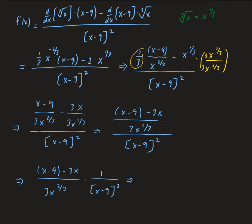Simplifying, we can distribute: x minus nine minus three x gives us minus two x minus nine. And all this is divided by three x to the two-thirds times x minus nine to the power two. That is our solution.